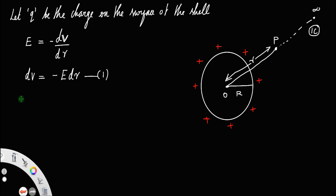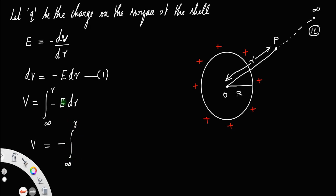To get the total potential V, you must integrate this equation, that is minus E dR. The variable is dR, and the limit of integration is from infinity to the distance r — that is, infinity to r. The value of electric field at point P due to this spherical shell is equal to 1 by 4π epsilon-0, the charge on the shell divided by the distance squared — that is, r squared — into dR.